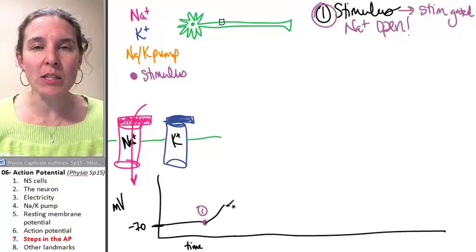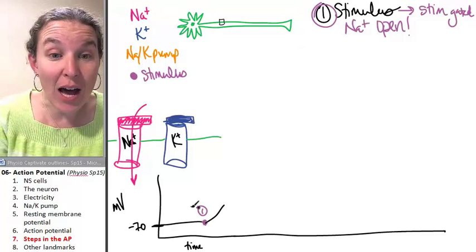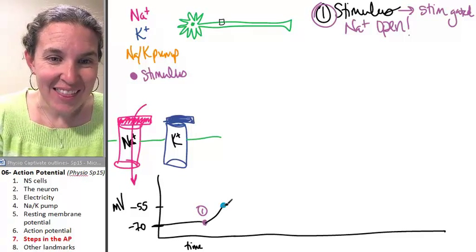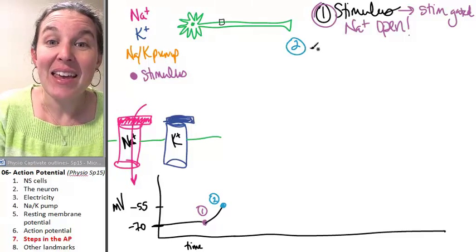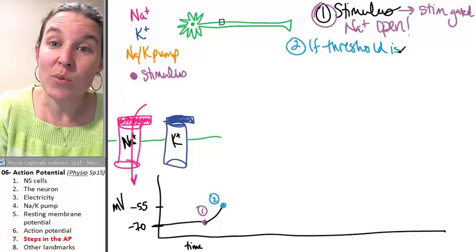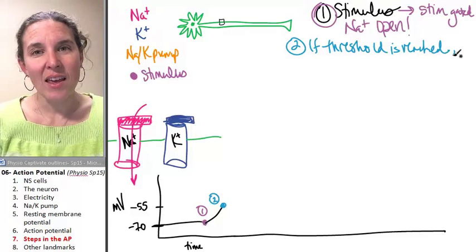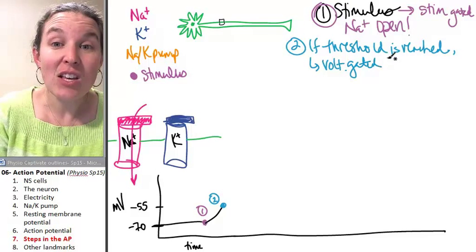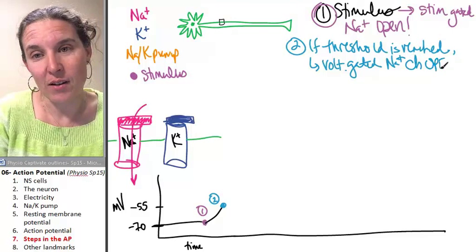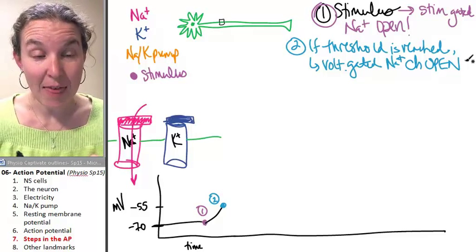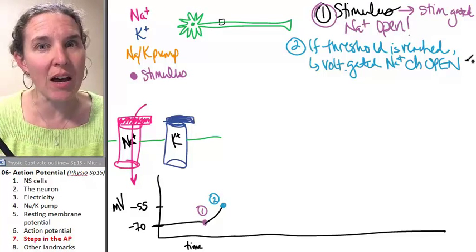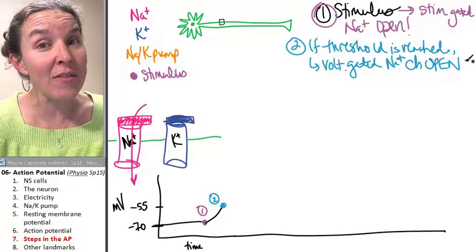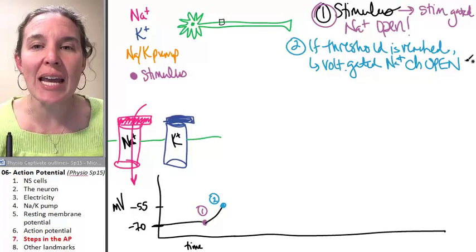It's going to become more positive because positive charges came in. And guess what? If the stimulus was big enough to cause a membrane potential change up to about negative 55. That's threshold. If threshold is reached, then voltage-gated sodium channels open. The first ones were stimulus-gated. If the stimulus was big enough, enough of them would open and change the membrane potential to negative 55 or threshold.